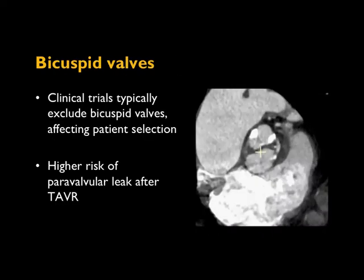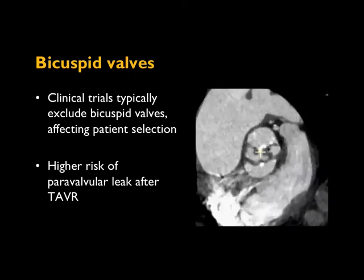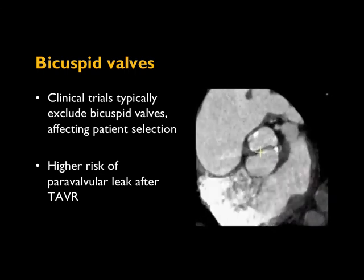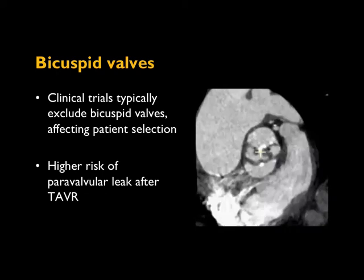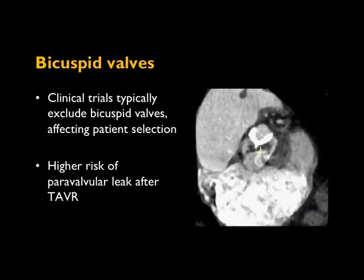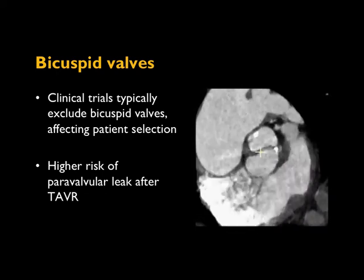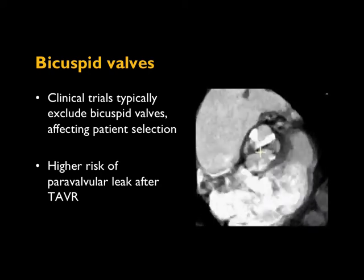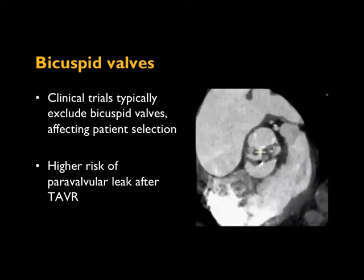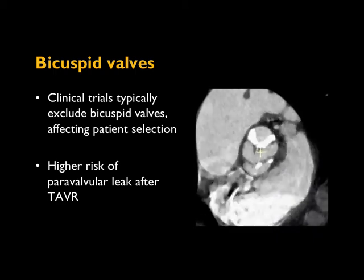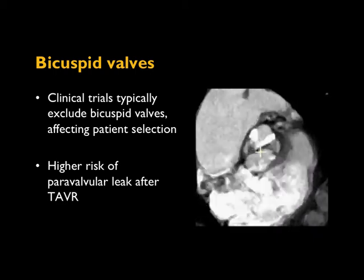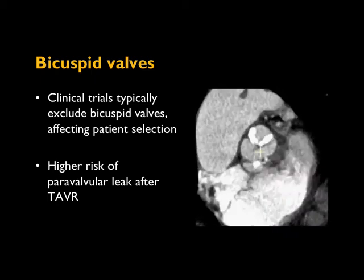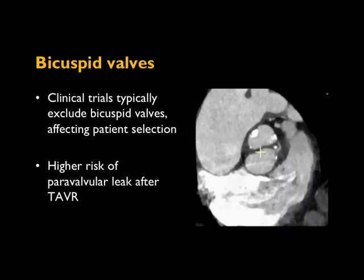Bicuspid valves should be reported because patients with bicuspid valves tend to do a little worse after the procedure than those with a tricuspid valve. It's important to have that discussion with the patient and temper expectations. Also, if patients are enrolled in a clinical trial, they will often be excluded if they have a bicuspid valve.